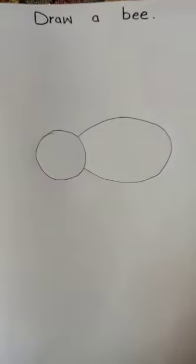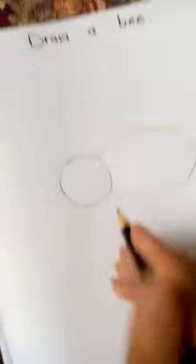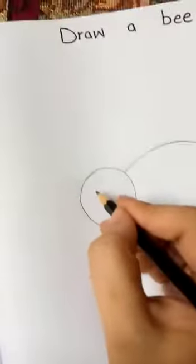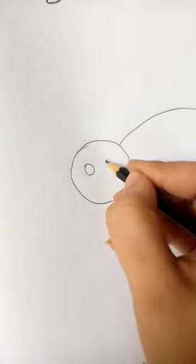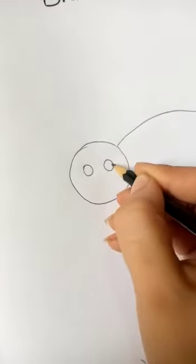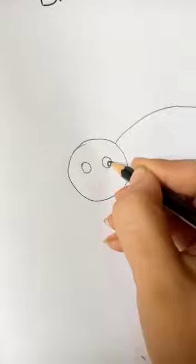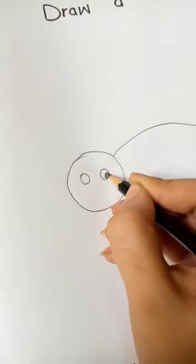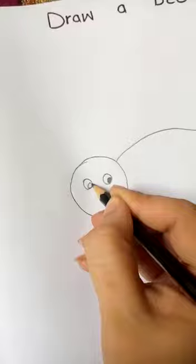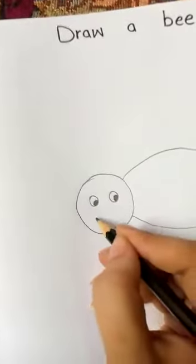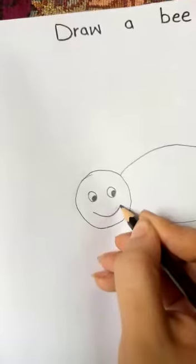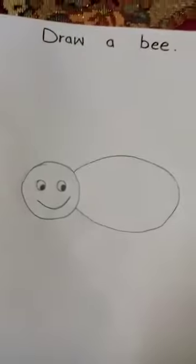Now again, two small circles to make an eye. Okay? Good.